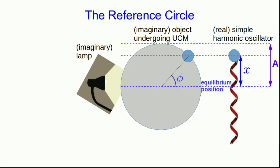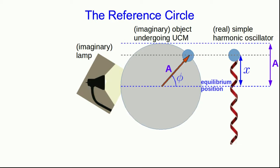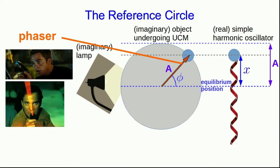So we imagine an object which is undergoing uniform circular motion next to our simple harmonic oscillator that we're trying to analyze, and it moves around a thing that we call the reference circle. The reference circle is lined up with the motion of the oscillator so that its center is even with the equilibrium position and its radius matches the amplitude of the simple harmonic oscillator's motion. And in particular there's an arrow that points from the center of the circle out to this imaginary object. We call this arrow the phasor.